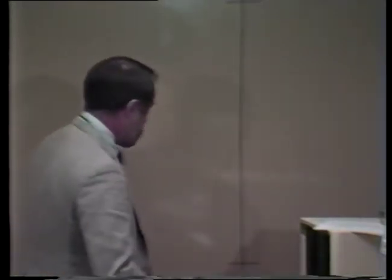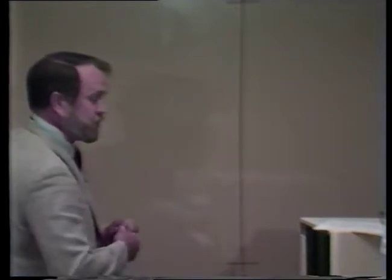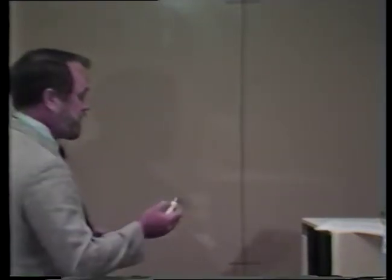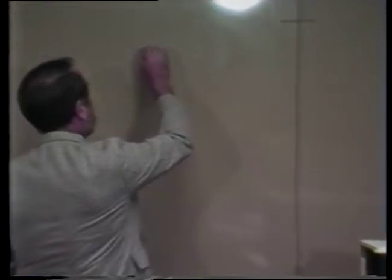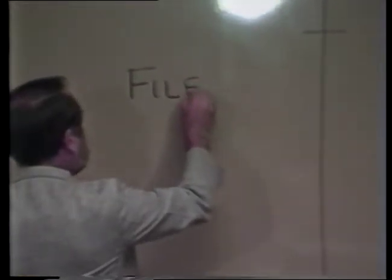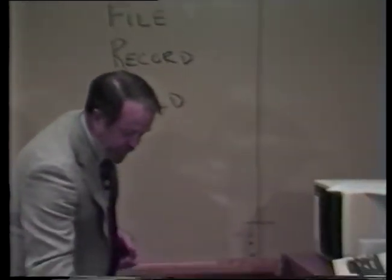Now let's write those words on the board here so that we have them embedded in our mind and we can use them fairly comfortably in the context of database management. We have the word file, which we've used before. A database is a file. We have the word record, which we're using here for the first time. The file contains records. And then we have the word field, which further subdivides the records into smaller sections. So we'll use file, record, and field fairly glibly here, and we hope you understand that and can follow it very nicely.